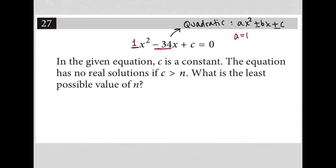The coefficient here in front of the x is -34, which means our b is -34, and our c is just c, right? Probably what we're going to try to find. Our c is equal to c. There's no number there.